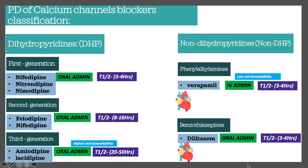Verapamil and diltiazem mainly work on the heart — cardiac muscle tissue — whereas first, second, and third generation DHPs such as amlodipine, felodipine, and nifedipine all work on the vasculature, meaning blood vessels. So non-DHPs affect heart muscle, while DHPs work on vasculature. When you give amlodipine, it works by causing dilation of arterioles in peripheral and large arteries, whereas non-DHPs like verapamil and diltiazem work by slowing down contractility.